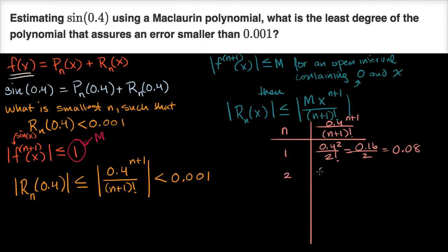Let's try n equals two. That gives 0.4 to the third power over 3 factorial: 0.064 over 6, which is a little more than 0.01. So n equals two is still not large enough.